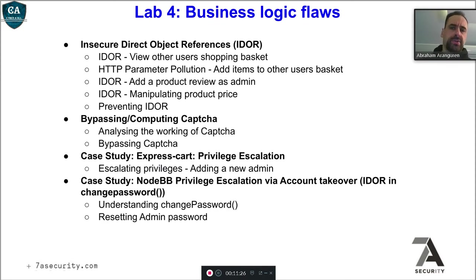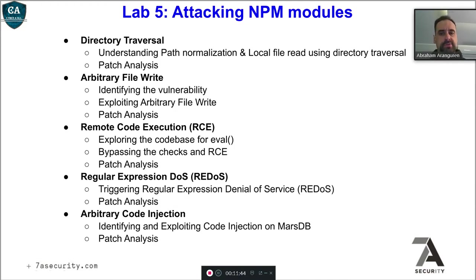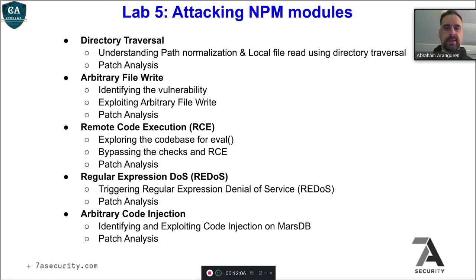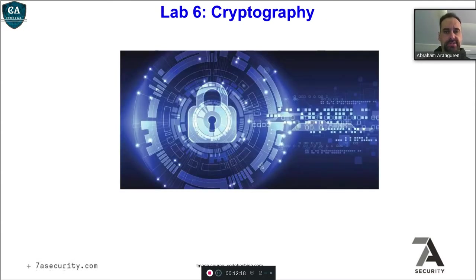In lab 4, we talk about business logic flaws: direct object references, bypassing and computing CAPTCHA, privilege escalation with ExpressJS. In lab 5, attacking NPM modules — because a Node.js web application is typically small, but if you take into account all the dependencies, there's really a lot of code. We cover many vulnerabilities inherited from dependencies: directory traversal, arbitrary file write, remote code execution, regular expression denial of service, and arbitrary code injection.